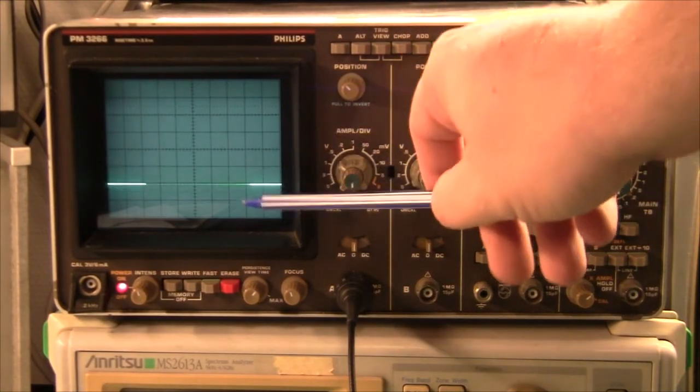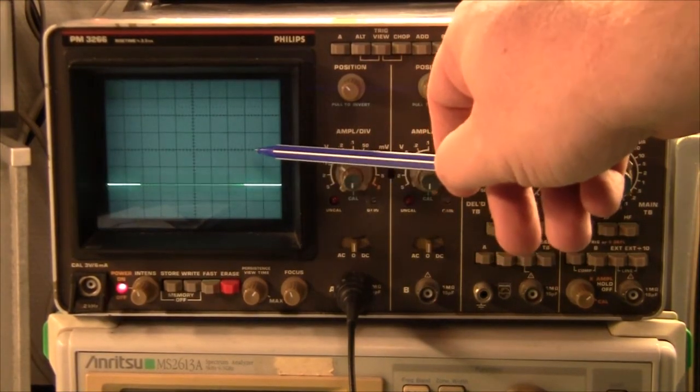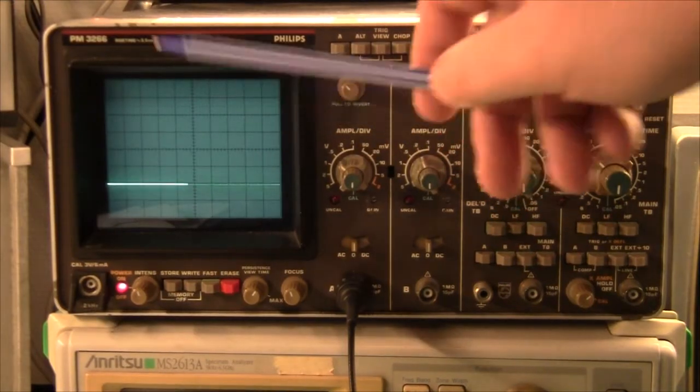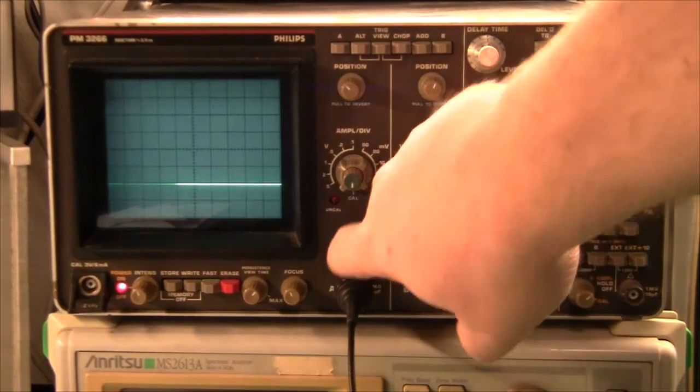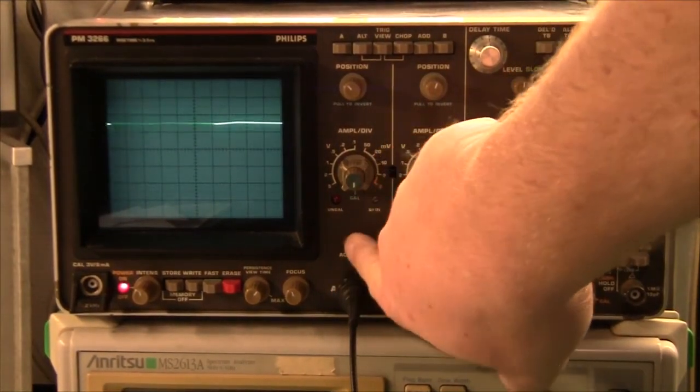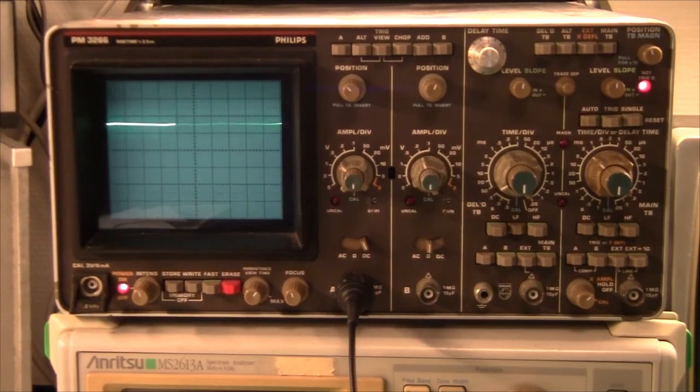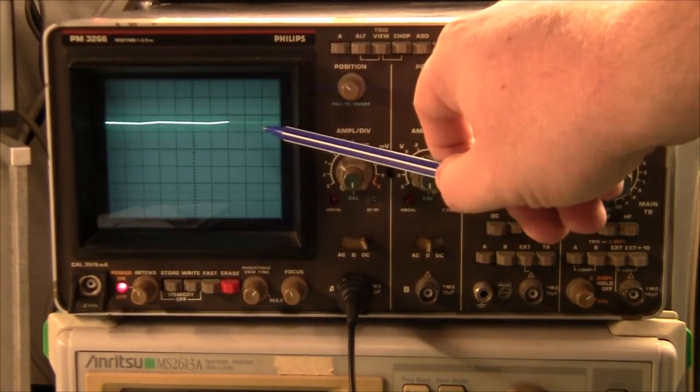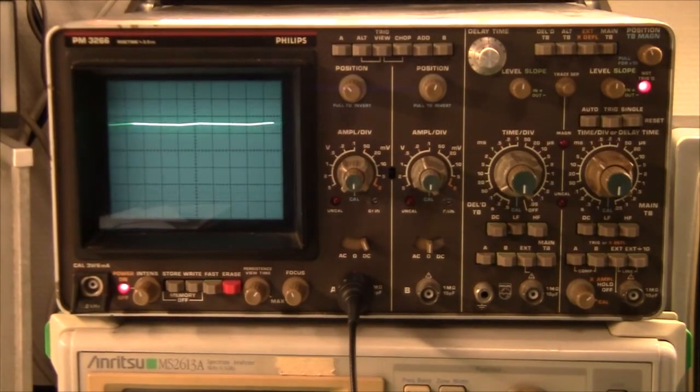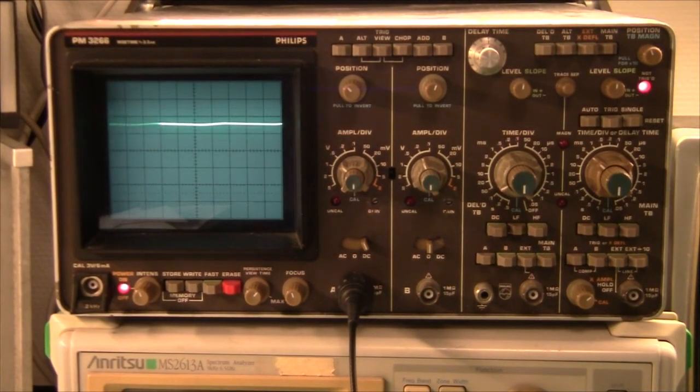So if we look at the screen itself, we have 5 volts here, 10 volts, 15, 20, 25, so on and so forth. So if I switch the input to DC, which is the normal mode, you can see that the trace is jumping up from here to here, which is 5, 10, 15, 18 volts. So that follows the theory very nicely.